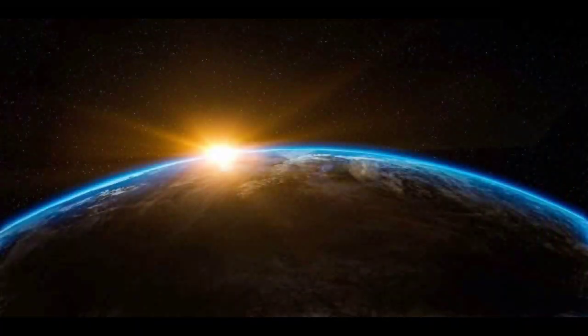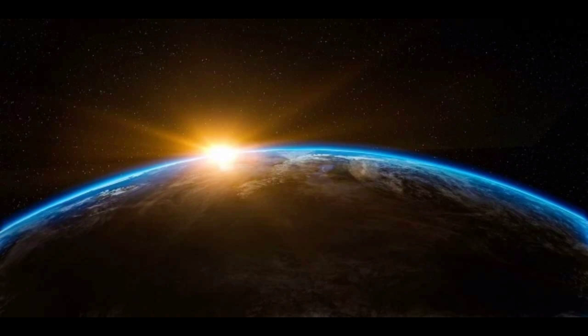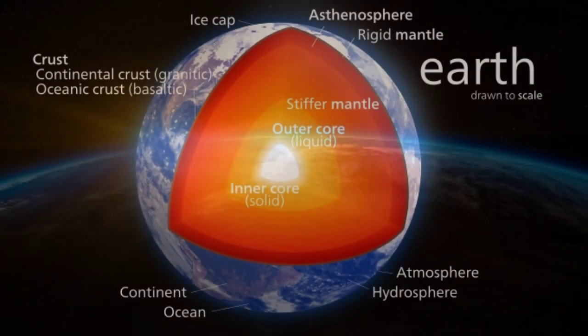The ozone layer is a thin part of Earth's atmosphere that absorbs almost all of the Sun's harmful radiation. It occurs in Earth's upper atmosphere and lower atmosphere.